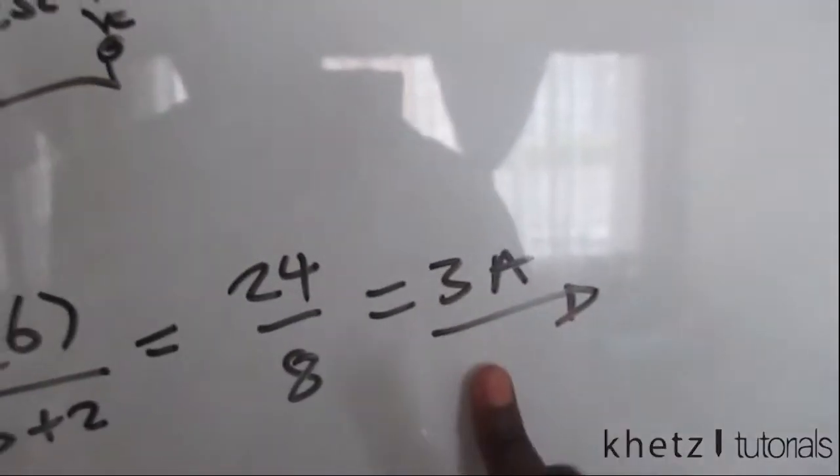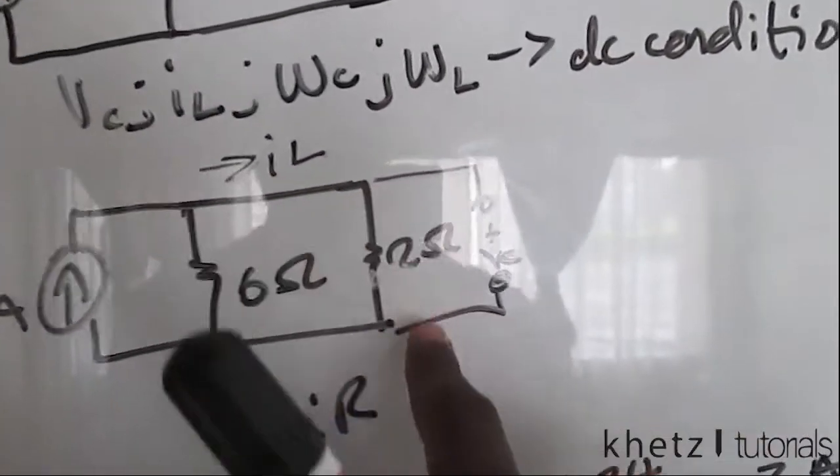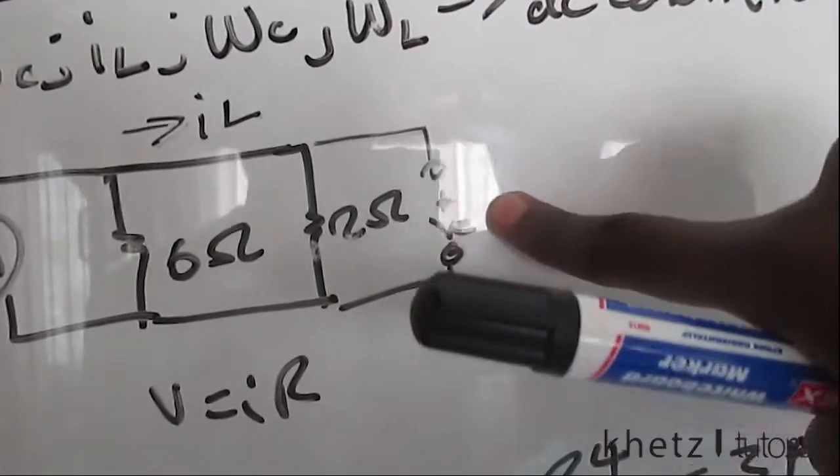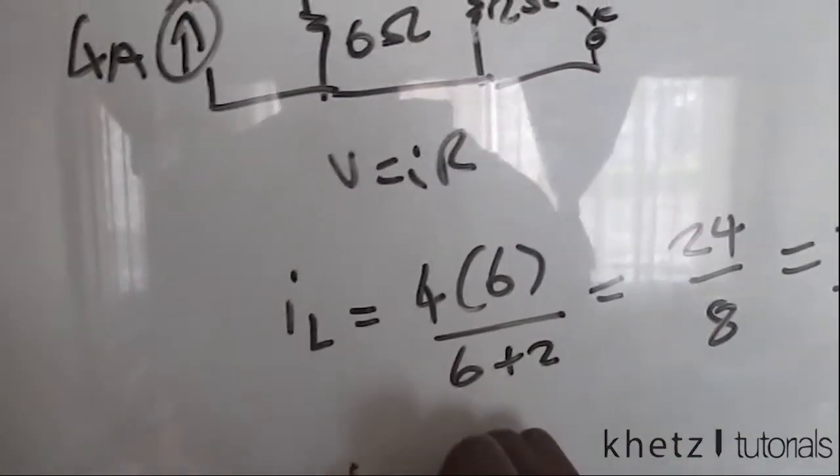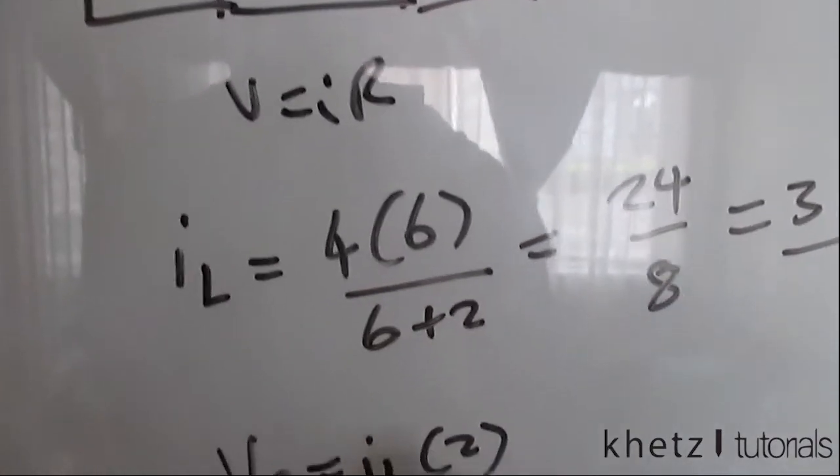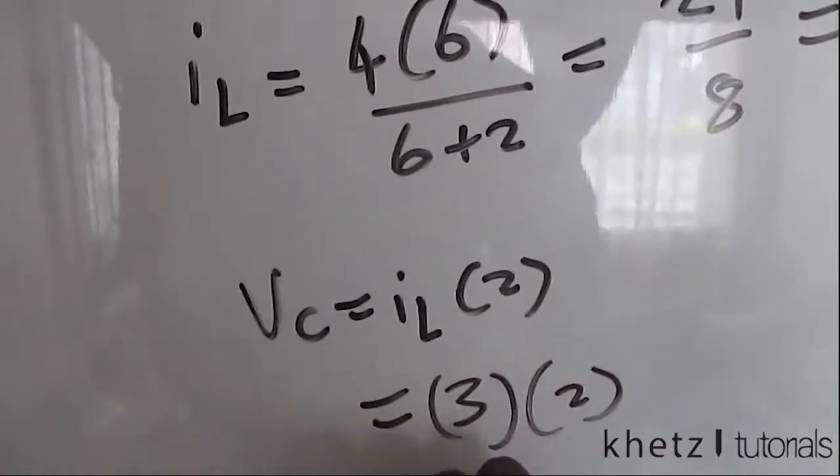After finding this IL, it will go all the way into this 2-ohm resistor, and this 2-ohm resistor, as we said, is in parallel with VC. Therefore, VC equals IL multiplied by 2. We found our IL to be 3, so multiplying that by 2 will give us a VC of 6 volts.